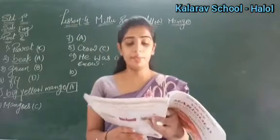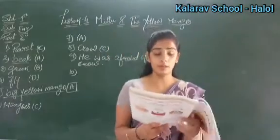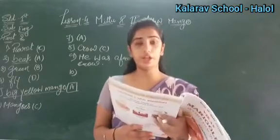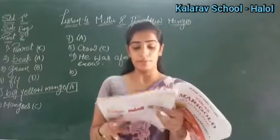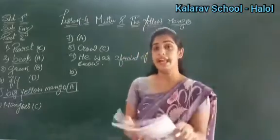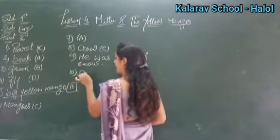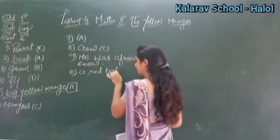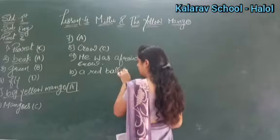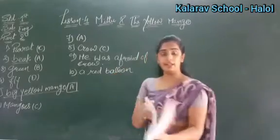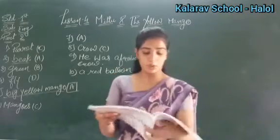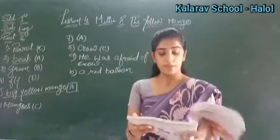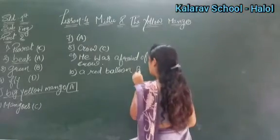Question 10: Options are black crow, red balloon, yellow mango, or green mango. He picked up a red balloon, so your correct option is B.